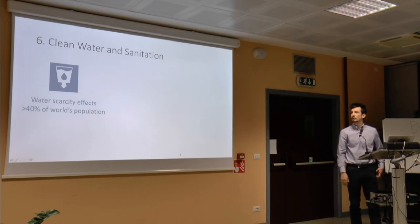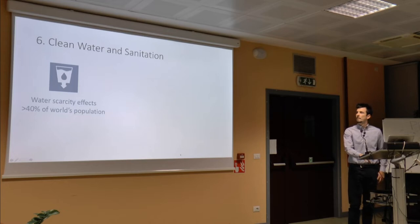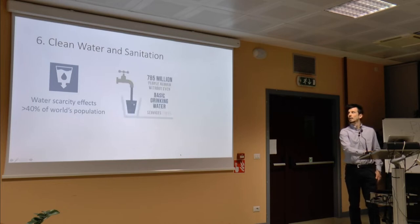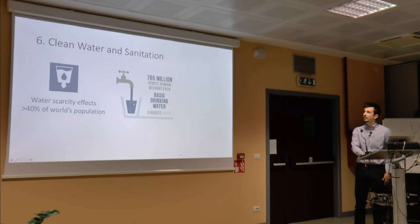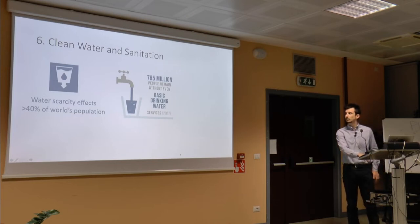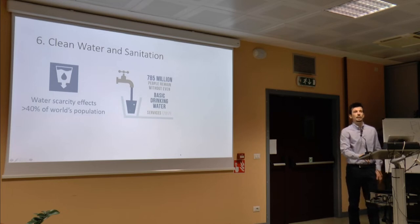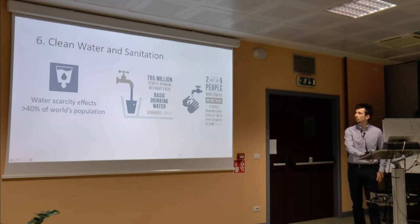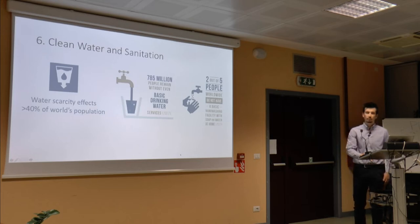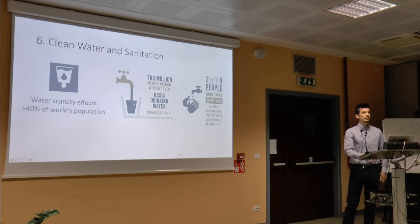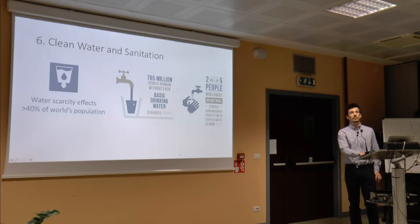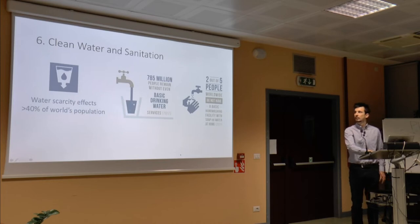Water scarcity affects more than 40% of the world's total population. By water scarcity, this doesn't mean only the total lack of water, but also cases where water is provided but probably not safe enough to be exploited. 785 million people remain without even basic drinking water as of 2017. And 2 out of 5 people worldwide do not have basic hand washing facilities with soap and water at home — a fact showing that 40% of people in the world lack something all of us take for granted.